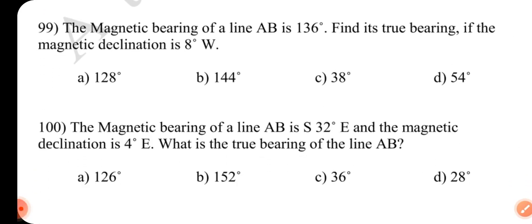Question number 99. The magnetic bearing of a line AB is 136 degrees. Find its true bearing if the magnetic declination is 8 degrees west. Answer is A 128 degree.